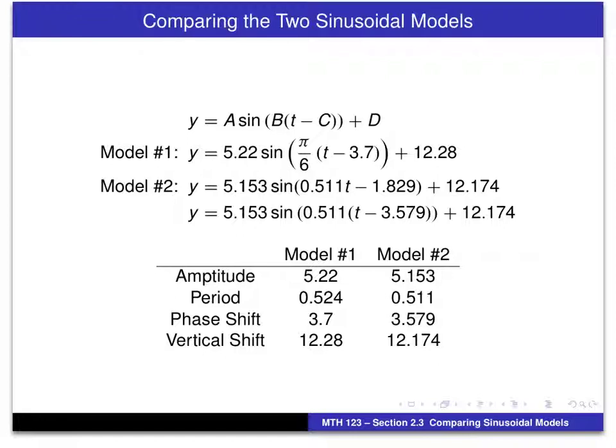actually uses a mathematical method for determining that equation. There is a numerical measure of the error of a sinusoidal model between the sinusoidal model and the actual data. And you calculate this error. And what the sine regression formula does, then, is chooses the model with the smallest possible error.